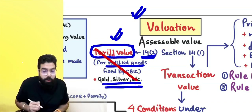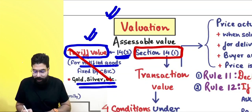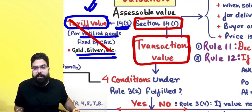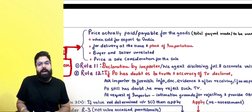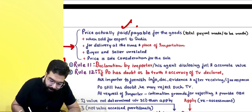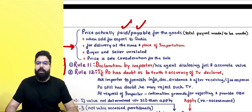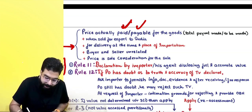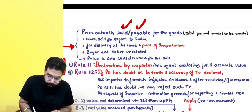If your goods are not notified, Section 14(1) says pay duty on the transaction value. Transaction value means the price paid or payable — the total price you have paid or will pay to the person. We are learning import valuation here.